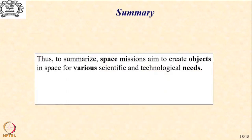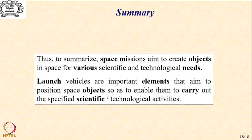To summarize: space missions aim to create objects in space for various scientific and technological needs. Launch vehicles are important elements that aim to position space objects so as to enable them to carry out specified scientific and technological activities. We have completed this introduction to the subject and will next look at the aim and scope of the present course. See you in the next lecture.